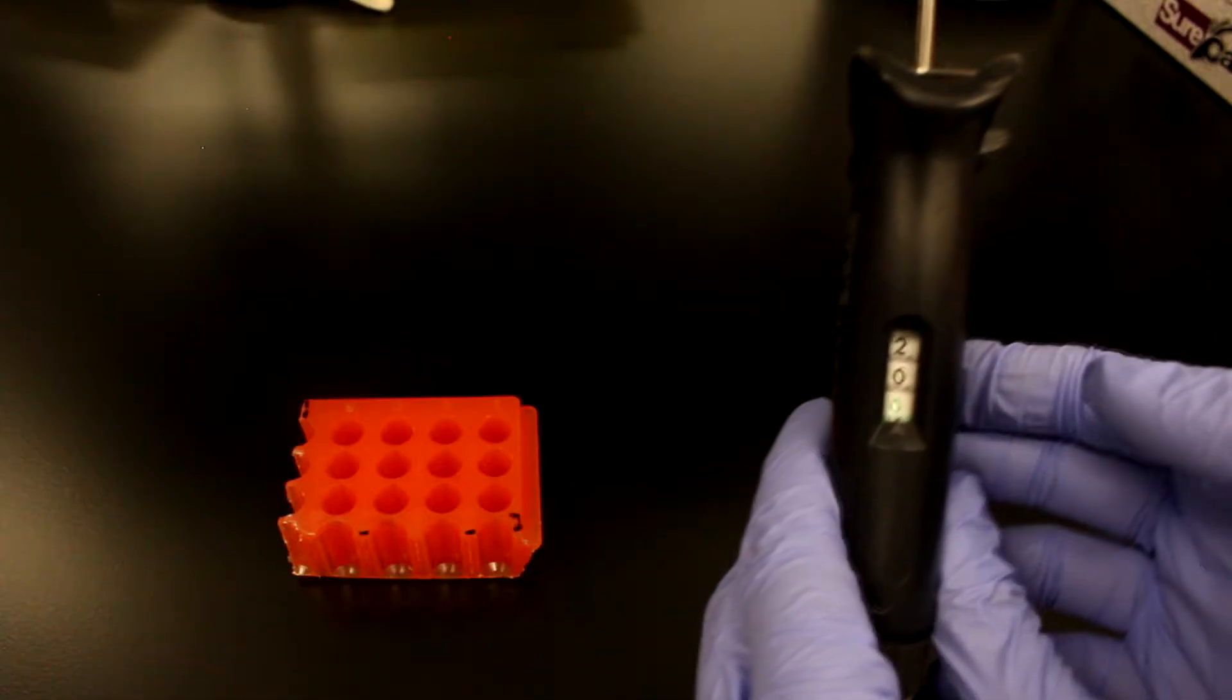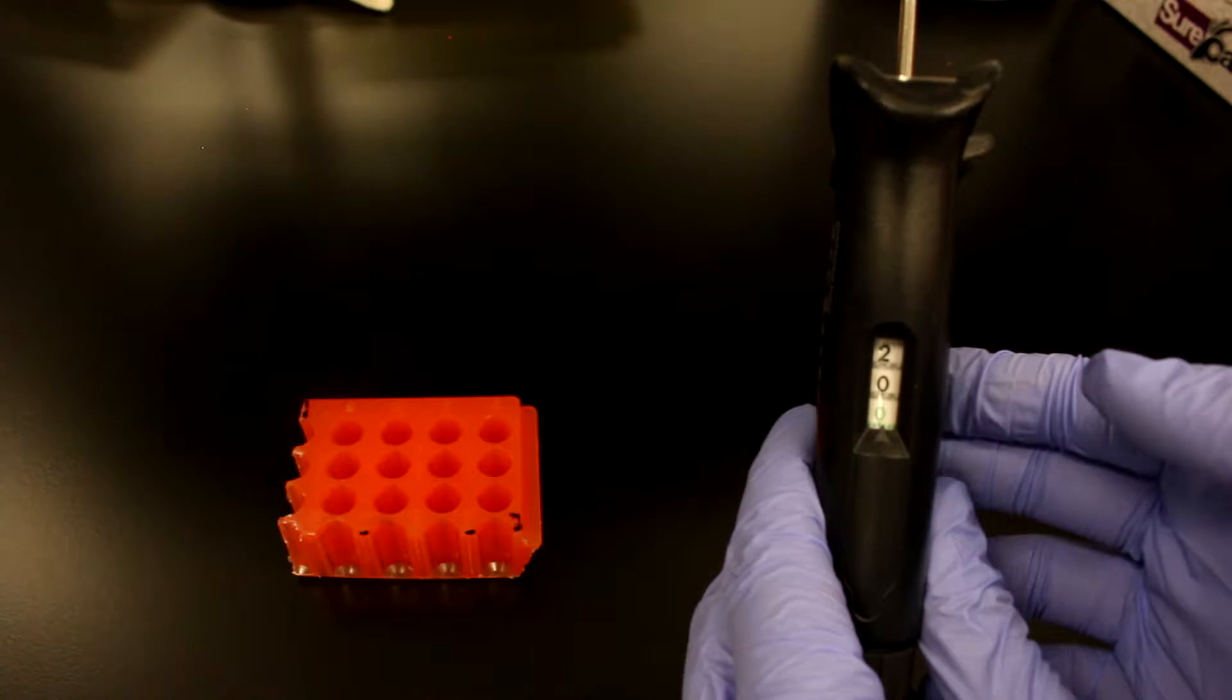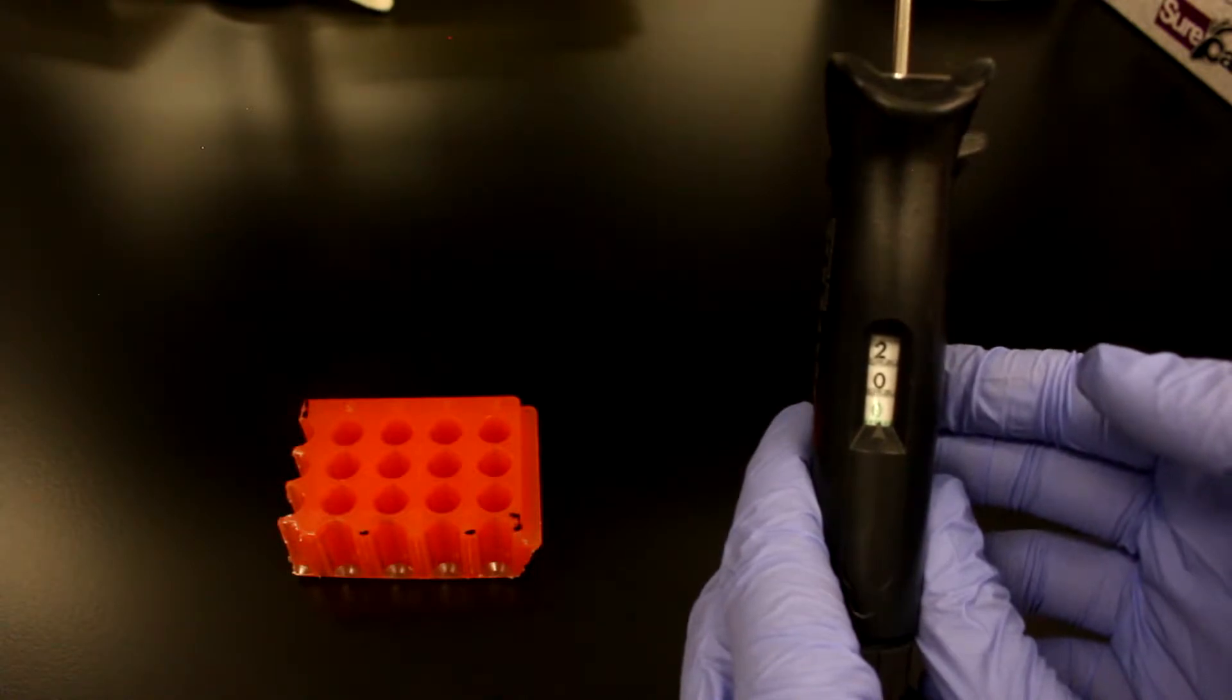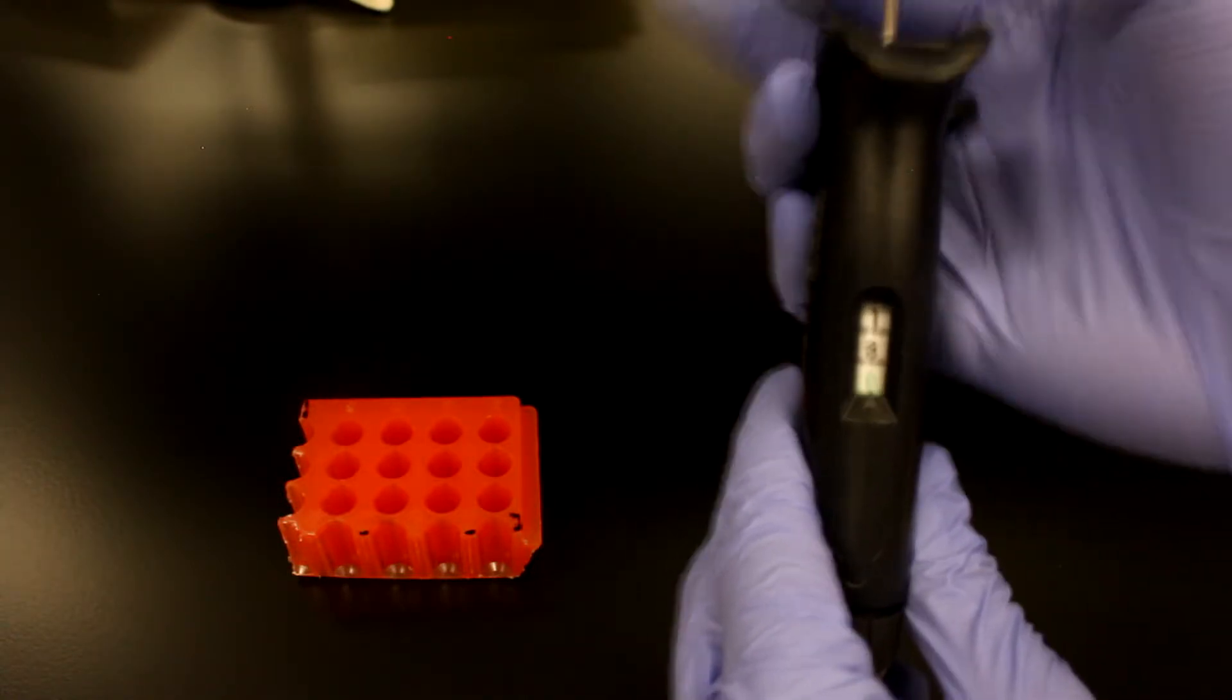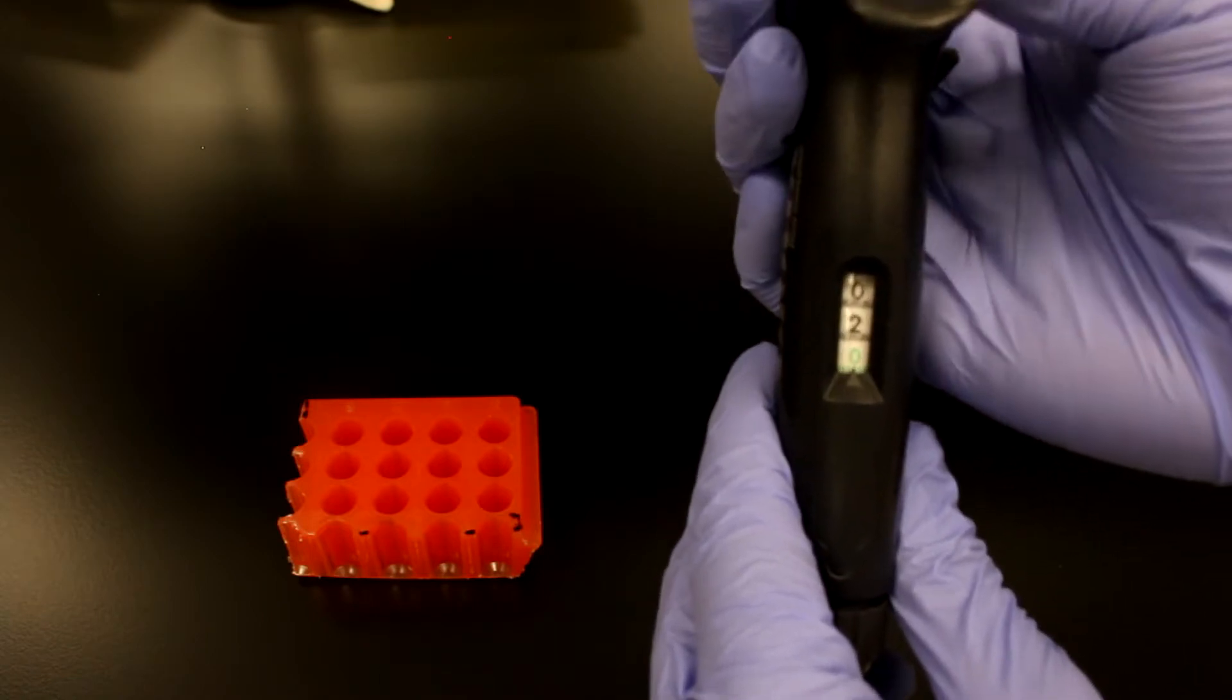Pipettes must be kept at their maximum volume, this one at 20 microliters to maintain accuracy. As shown, the range of this pipette is between 20 and 2 microliters.